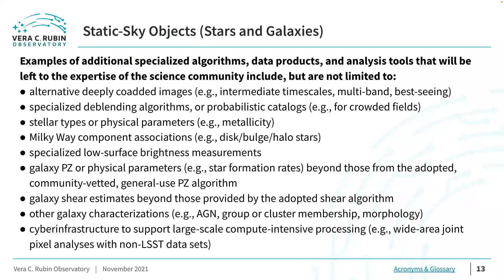Examples of additional specialized algorithms, data products, and analysis tools that will be left to the expertise of the science community include, but are not limited to: alternative types of deeply stacked co-added images; specialized de-blending algorithms or probabilistic catalogs for crowded fields; stellar types or physical parameters; Milky Way component associations; specialized low surface brightness measurements; galaxy photometric redshift or physical parameters beyond those from the adopted general-use photo-z algorithm; galaxy shear estimates beyond those provided by the adopted shear algorithm; other galaxy characterizations like cluster membership or morphology; and cyber infrastructure to support large-scale compute-intensive processing.